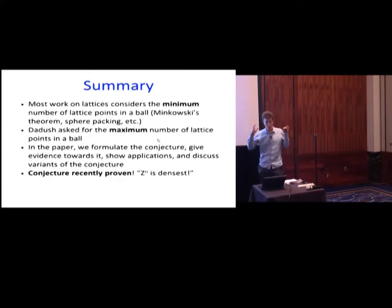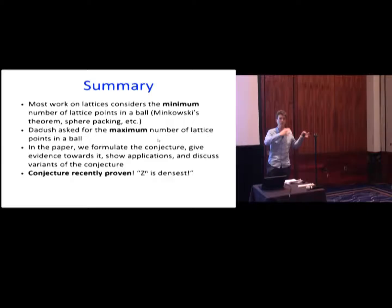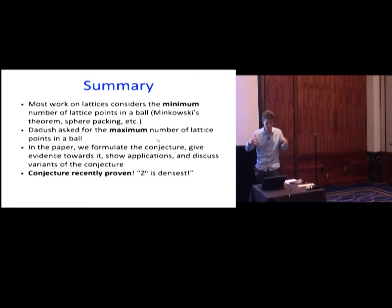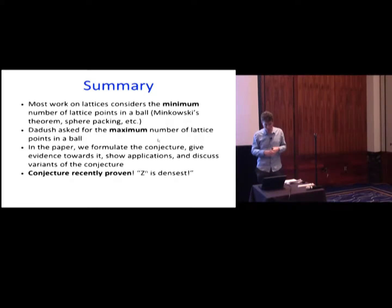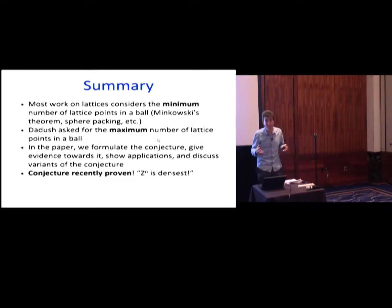Let me summarize. Most work in this area focuses on the minimum number of lattice points in a ball — starting from Minkowski and all the work in the 20th century. What Dadush asks is for the dual question: what's the maximum number of lattice points you can have in a ball under natural conditions on the determinant? What we do in the paper is formulate a conjecture, give evidence towards it — now it's actually proven — show lots of applications, and discuss variants. The conjecture, now theorem, tells us that Zⁿ is the densest lattice.